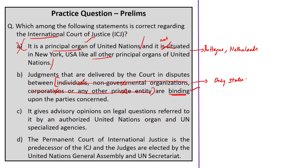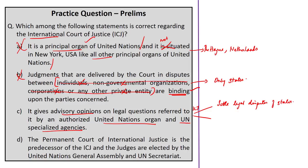Option B states that judgments delivered by the court in disputes between individuals, NGOs, corporations, or any other private entity are binding. The ICJ's judgments are binding, but only states (countries) are eligible to appear before the court in contentious cases. The ICJ has no jurisdiction to deal with applications from individuals, NGOs, corporations, or other private entities. A state may take up the case of one of its nationals and invoke wrongs against another state, at which point it becomes a dispute between two states. So option B is wrong.